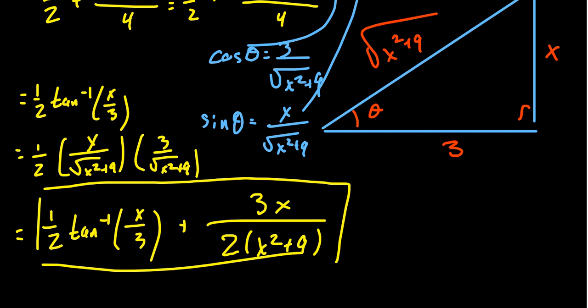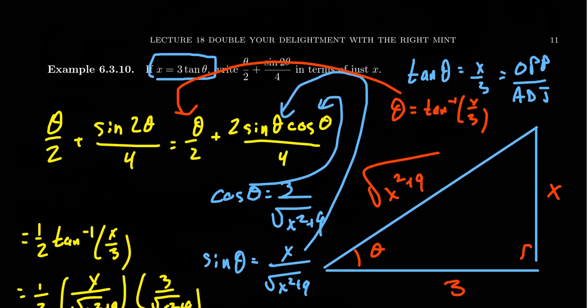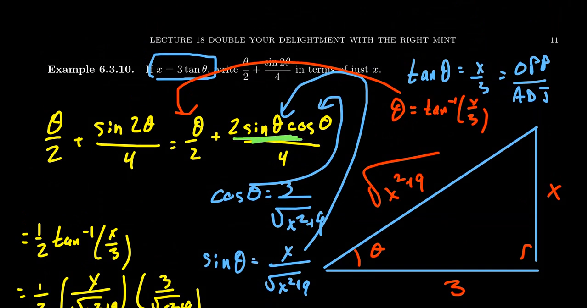This idea of trigonometric substitution is very useful in the calculus setting, so it's good practice to be able to convert between trigonometric expressions and algebraic expressions using trigonometric substitutions. In this example, we sometimes have to use a double angle identity or other types of identities to carry out these substitutions, so it's a good idea to practice those identities now.